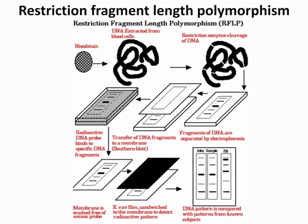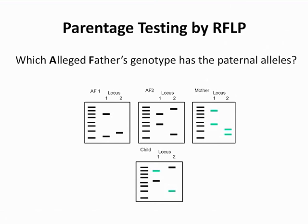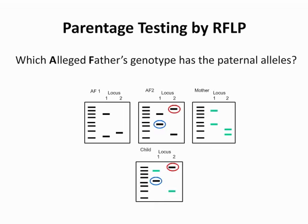You're likely to see an exam question asking you to read RFLP gels — for example, which alleged father's genotype has the paternal alleles. Looking at alleged father 1 in column 1, no fragments in the child match up. Looking at alleged father 2, we do see one that matches up. Going through all columns and matching fragments with the mother, you can determine that AF2 is the father of the child.